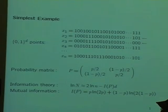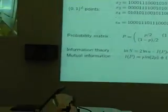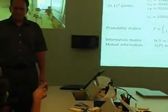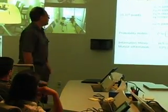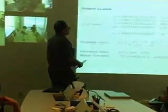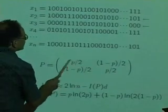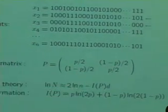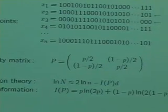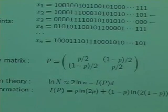In the probability matrix, the probabilities should sum to one. Because here p plus one minus p is one, divided by two, so this sum is a half, this sum is a half, and together the sum is one. This is not a transition matrix — it's a probability matrix.